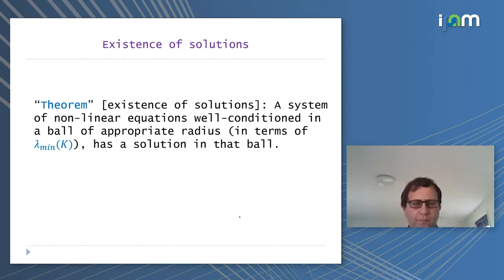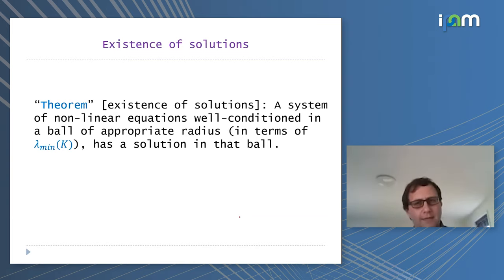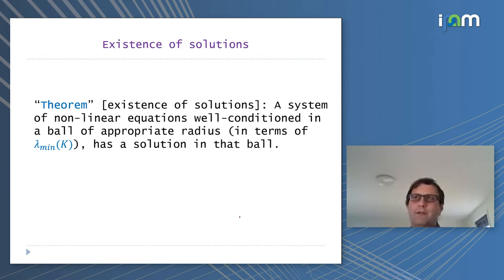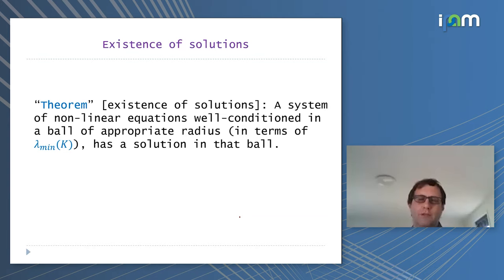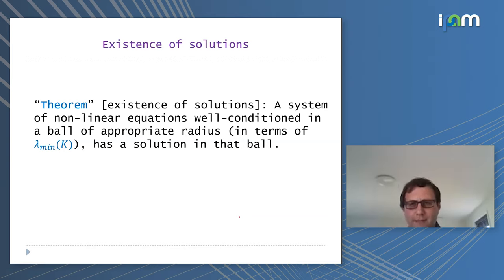How do you prove this? The proof goes via gradient descent — you show that gradient descent for a function satisfying this condition number converges. It's interesting that the theorem is formulated purely existentially, but to actually prove it you use an algorithm. Not that unusual — even existence of solutions for differential equations is proved via contraction. But gradient descent converges exponentially to a solution.